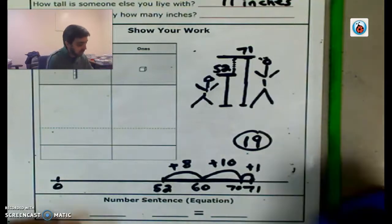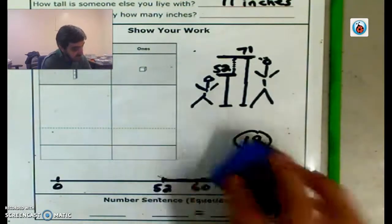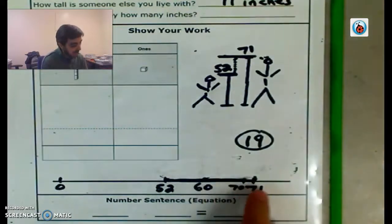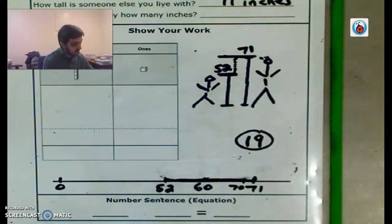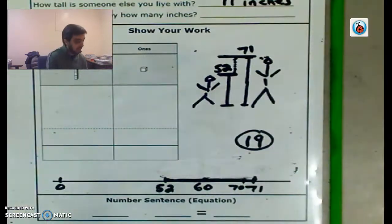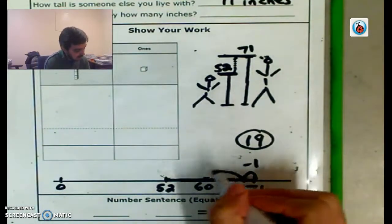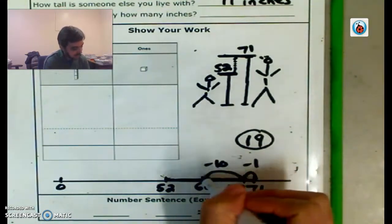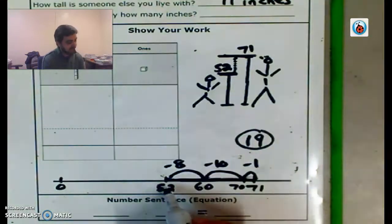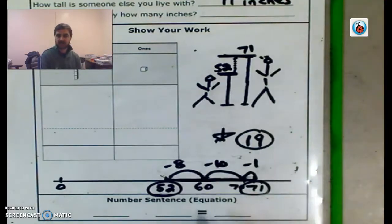But you could have also solved it another way. You could have started at 71 and hop backwards. If I jump back 1, that's 70. Hop back 10 more, that's 60. And hop back 8 more, that gets me to 52. You're still measuring the distance between 52 and 71, which is 19.